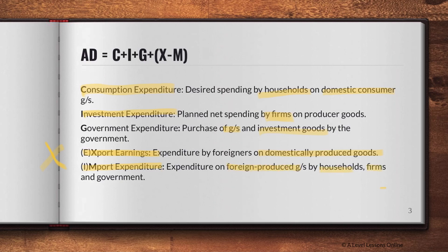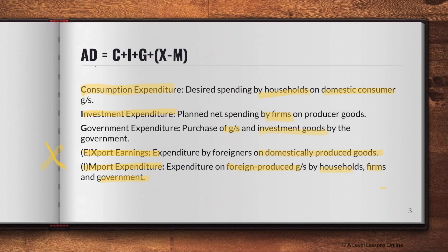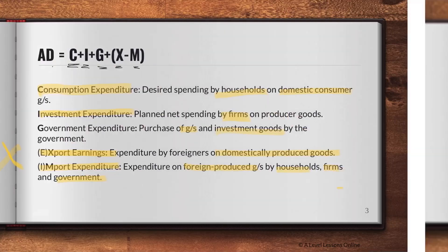Import expenditure M is the expenditure on foreign-produced goods and services by households, firms, and the government. The formula C + I + G + X − M means aggregate demand only looks at the domestic economy. We subtract imports because imports are foreign goods, not domestic goods. Domestic goods are what we export, so we take out M so that AD only represents demand for our own domestic economy.